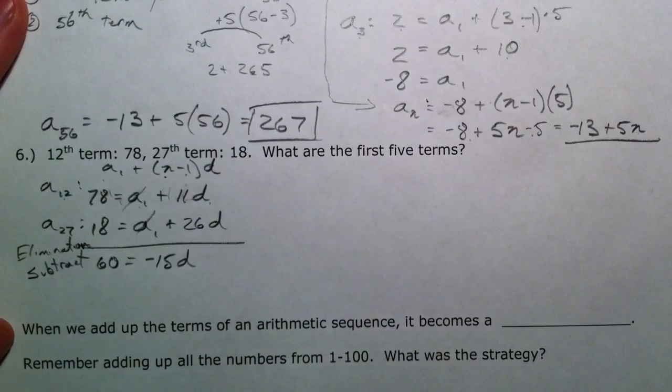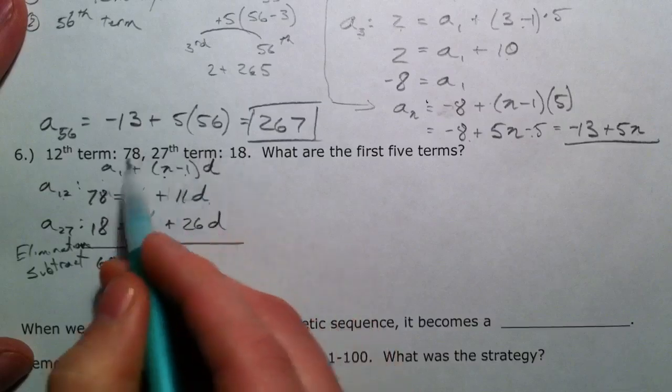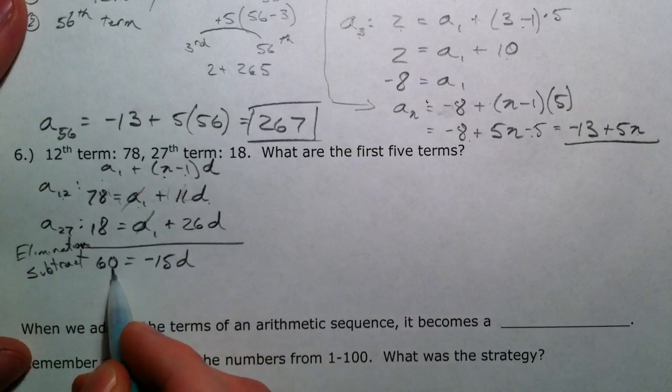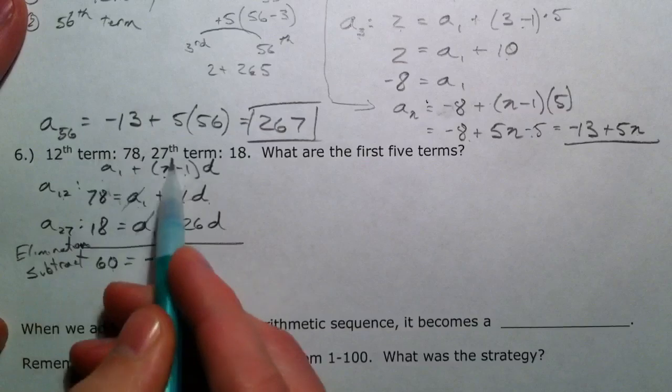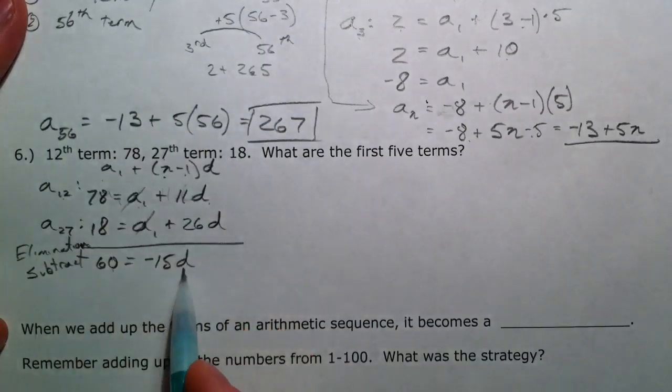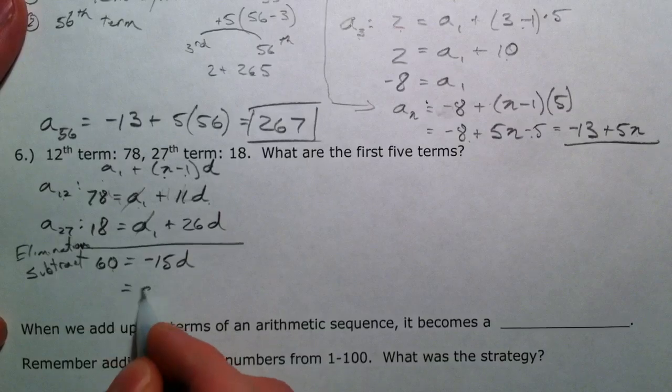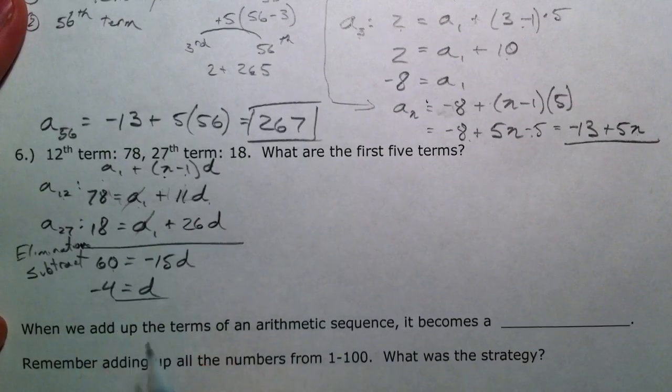This is the interesting part. The total difference between 78 and 18 is 60, and how many times did we do that? Well, there's 15 times we added something to get to 27. So 60 divided by 15 is negative 4, and so negative 4 is our common difference.